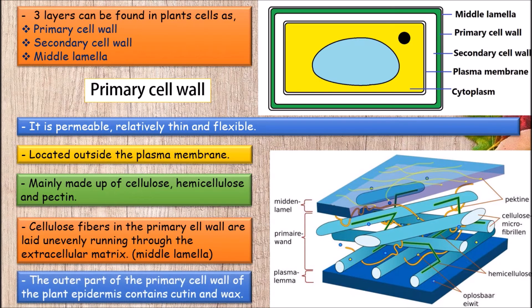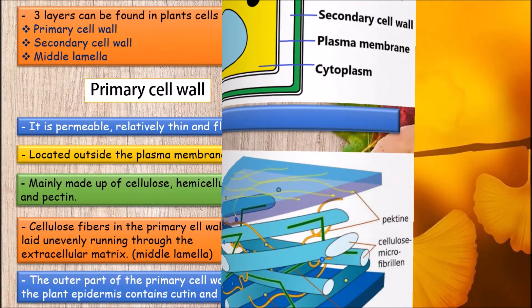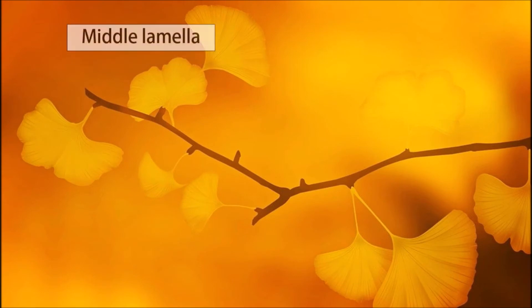Middle lamella. Just outside the primary cell wall, there is a thin layer called middle lamella, which is rich in pectin.